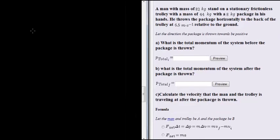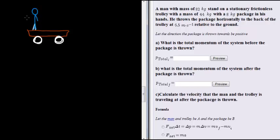Let's draw this picture so that we can understand. There's our trolley with white wheels, and here's our guy standing on the trolley — a blue little man — and he's got a package in his hands. Our man is 82 kilograms, the trolley is 44 kilograms, and the package is 8 kilograms. He's throwing the package towards the back of the trolley at 6.5 meters per second.